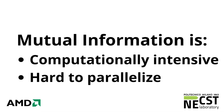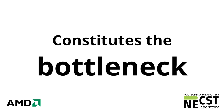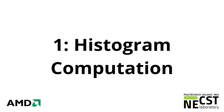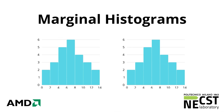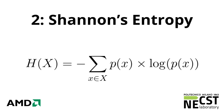Mutual information is computationally intensive and hard to parallelize, and constitutes the bottleneck of the whole optimization pipeline. To compute MI, two things are necessary. The first is histogram computation: the marginal histograms describe how colors are distributed in the two images, while the joint histogram is a 256 by 256 matrix that tells what is the probability of finding a pixel of a given color in one image knowing the color of the same pixel in the other image. The second part consists of applying Shannon's entropy formula to the marginal and joint histograms to obtain mutual information.